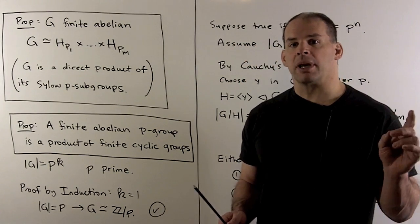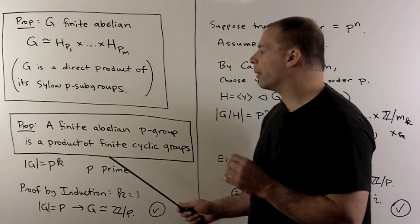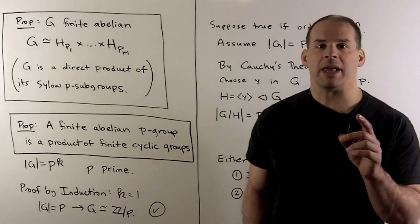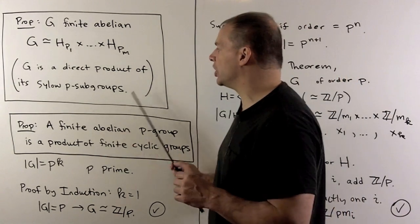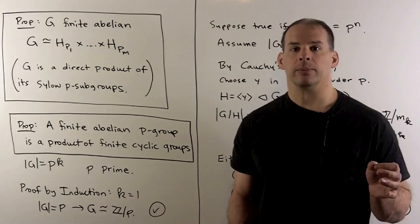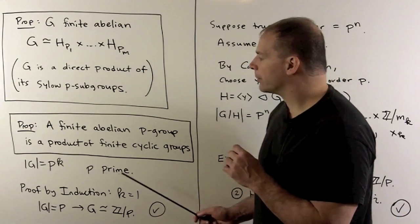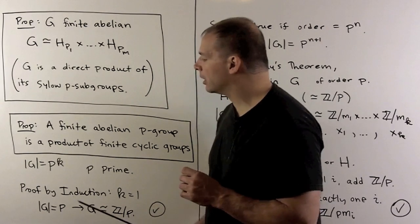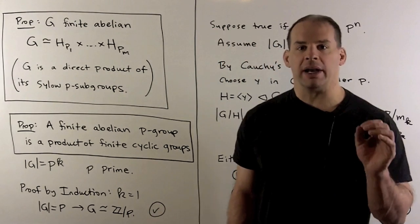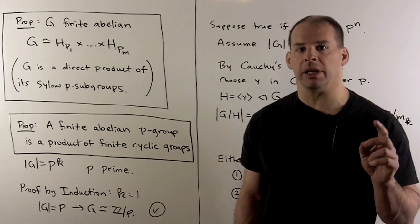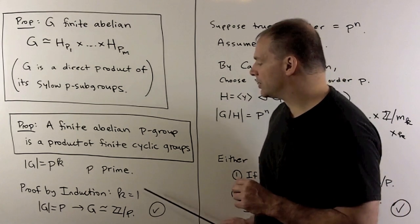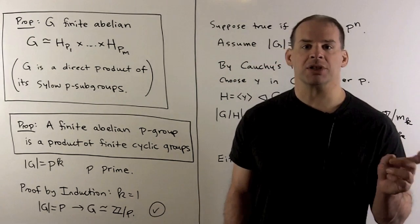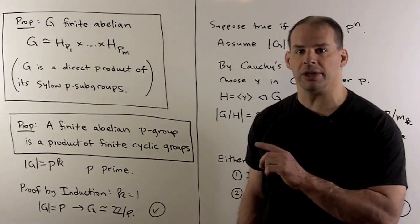Now, to get one step closer to the fundamental theorem, we're going to show that a finite abelian p-group is a product of finite cyclic groups. We can apply this to each Sylow p-subgroup in G, and then what remains is bookkeeping. For this statement, we'll assume the order of our group is p to a power, where p is a prime, and we'll use proof by induction on the exponent of p. When k equals one, the order of the group is the prime p, so G is isomorphic to Z mod p and our result holds in this case.